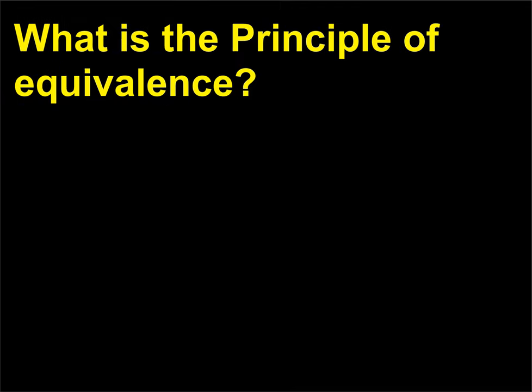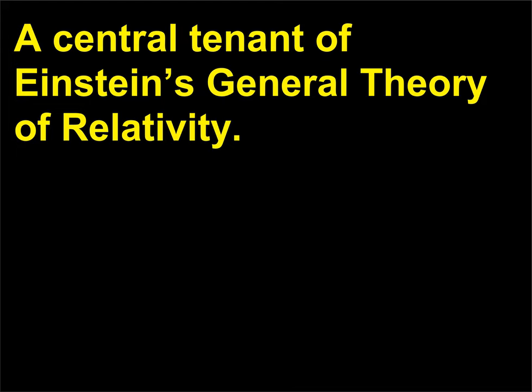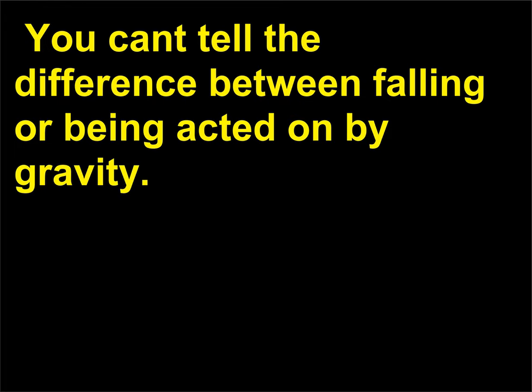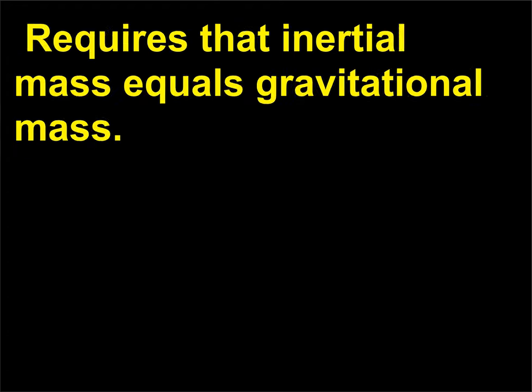What is the principle of equivalence? A central tenet of Einstein's general theory of relativity. The laws of physics in an accelerating reference frame or a gravitating frame are indistinguishable. You can't tell the difference between falling or being acted on by gravity. Requires that inertial mass equals gravitational mass.